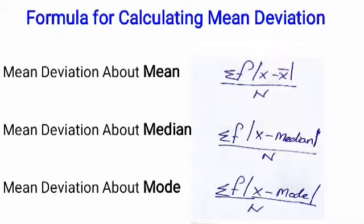To calculate mean deviation about mean, first we want to calculate x̄, then calculate x minus x̄, then take the absolute value of x minus x̄, and then apply the values in the formula.